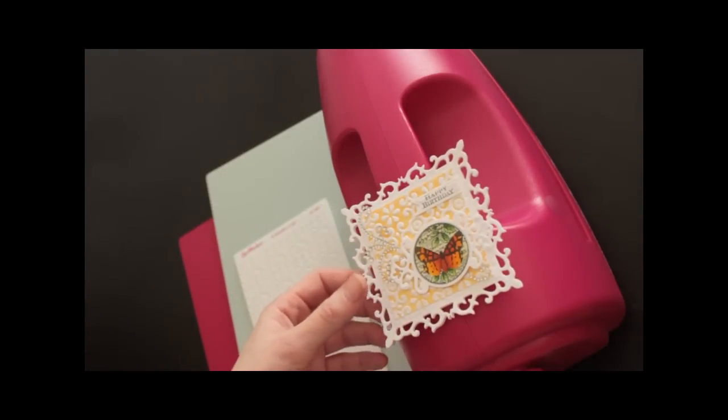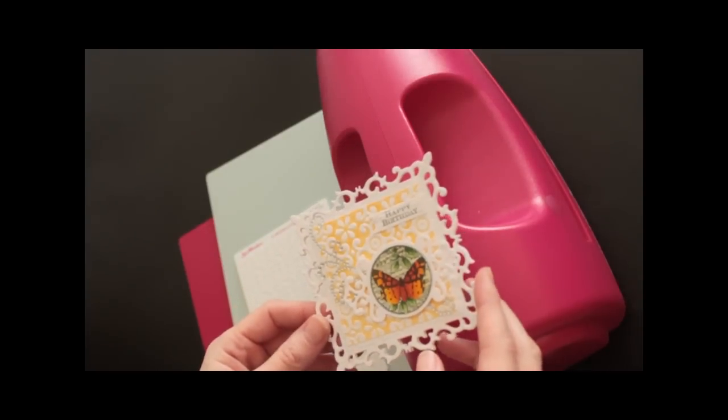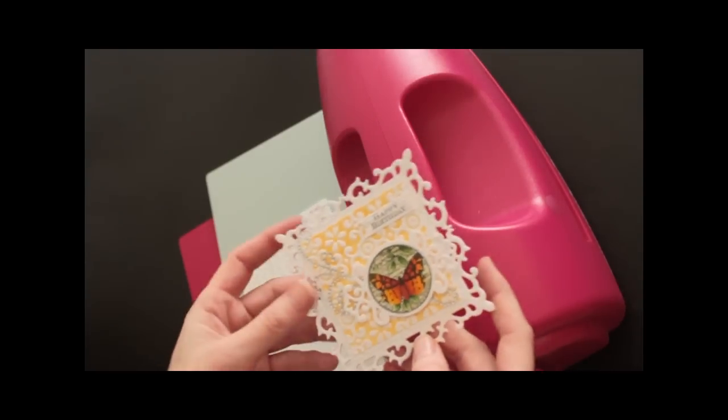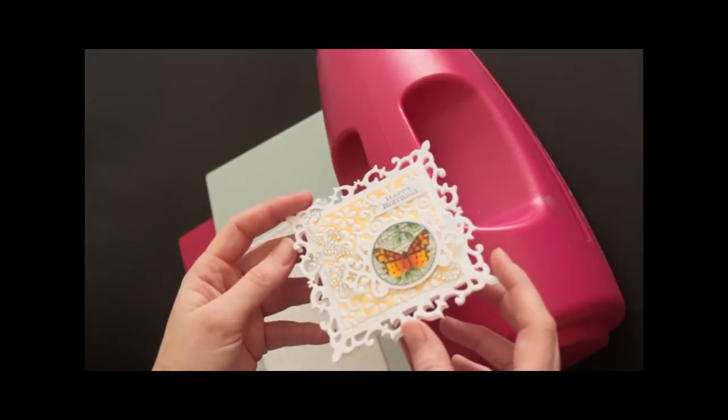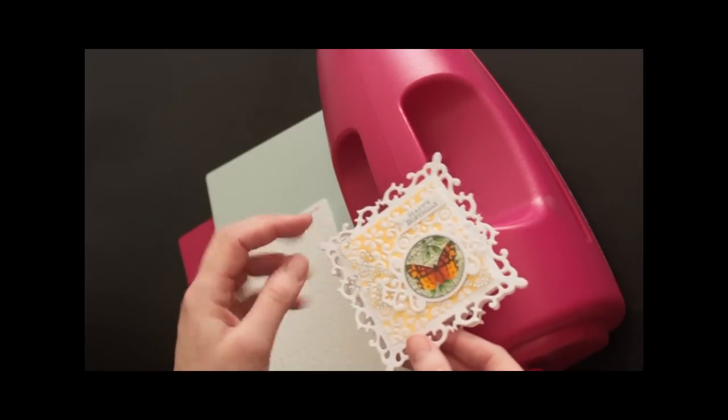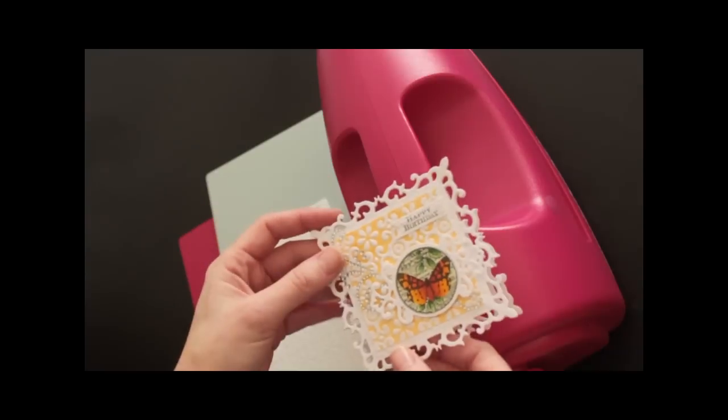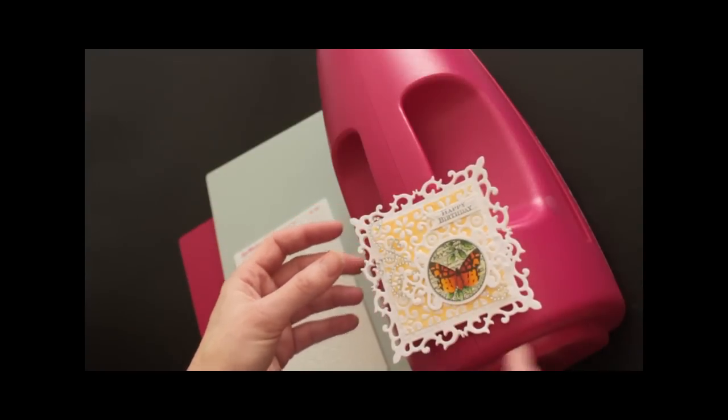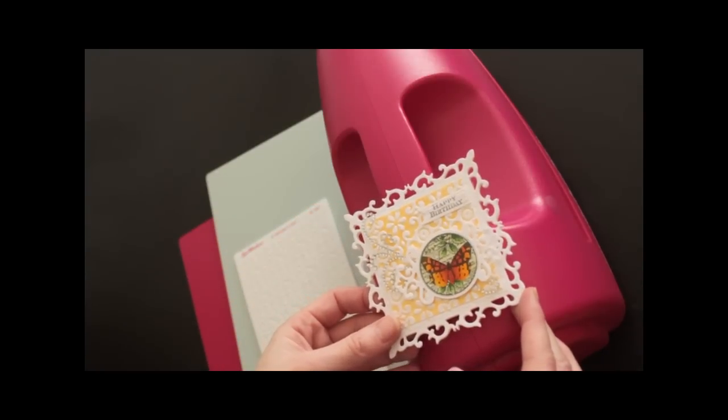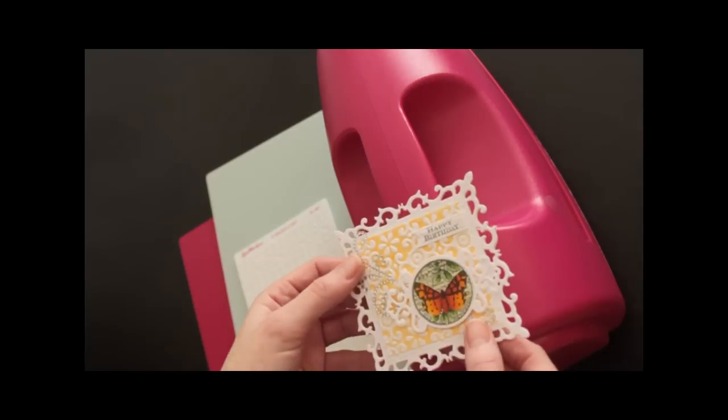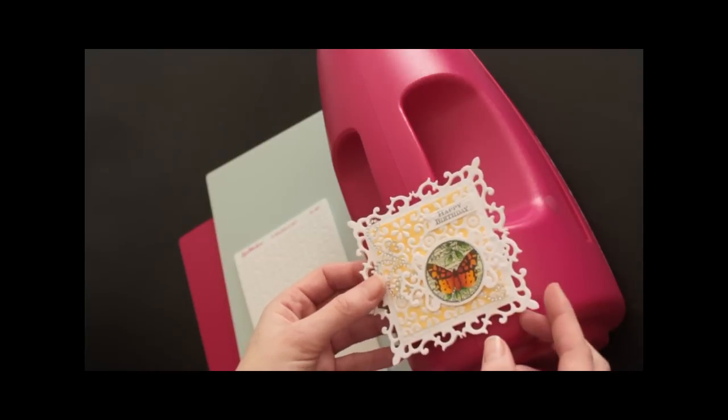For my sample, the card base was cut with the largest fleur-de-lis square. The center piece uses the fleur-de-lis accent die and a little pendant die for the sentiment. The image is from Just Right Stampers Botanical Butterflies and the rhinestones are from Want to Scrap.